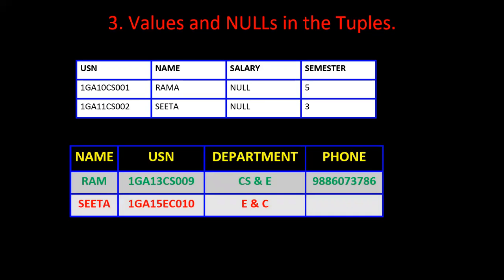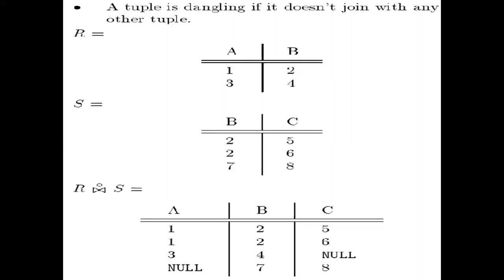In a second condition, I have entered values for name, USN, and department, but for Sita I have not entered any value for phone number. The phone number column is applicable to Sita, but she may not have a phone number, or she may have one and it is missing — she might have forgotten her phone number. So we can leave null for an attribute if it is not defined or if it is missing.